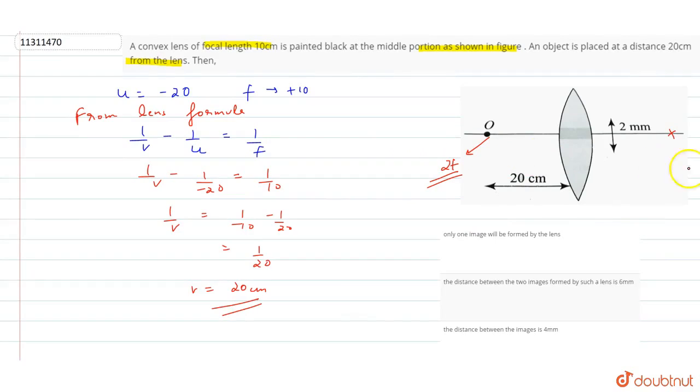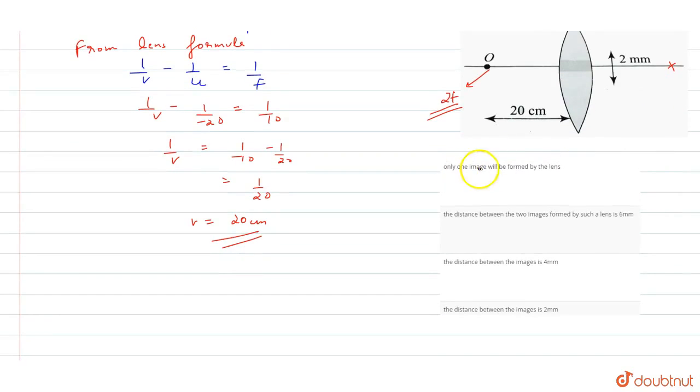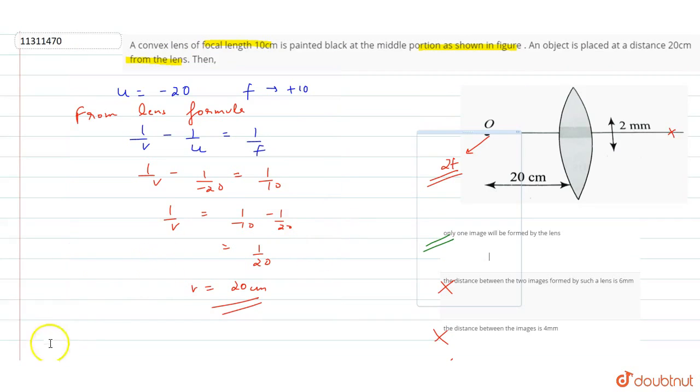Now we check the options. The option says only one image will be formed by the lens. If there's only one image, then the options about distance between two images are wrong. So our first option, that only one image is formed, is the correct answer because the optic axis is the same. This is the solution to our question.